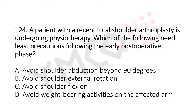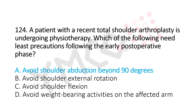Now let's move to question number 124. A patient with a recent total shoulder arthroplasty is undergoing physiotherapy. Which of the following precautions should be followed in the early postoperative phase? Option A: avoid shoulder abduction beyond 90 degrees. Option B: avoid shoulder external rotation. Option C: avoid shoulder flexion. Option D: avoid weight-bearing activities on the affected arm. The answer is option A: avoid shoulder abduction beyond 90 degrees.